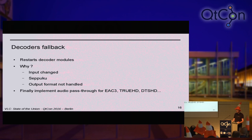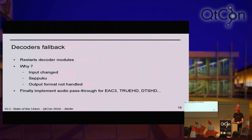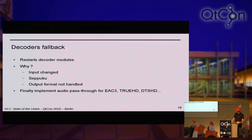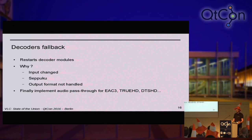The third case is to restart the decoder when the output format is not handled. This is very important because it finally allows us to enable pass-through for patent-free open source codecs like Dolby, E-AC3, TrueHD, and DTS-HD. I added a dummy pass-through codec that does nothing but requests whether the output can handle pass-through for a certain codec. If it can't, you go to the next decoder — AVCodec or MediaCodec. If it works, you get pass-through for that codec. E-AC3 support is in — TrueHD and DTS-HD are still work in progress but will be easy now that everything is in the core.